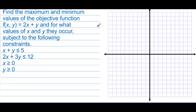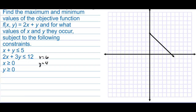Let's graph these two lines. On the first one, the x and y intercepts are both 5. On the other one, the x intercept is 6 and the y intercept is 4. So we draw a line connecting those intercepts for each equation.